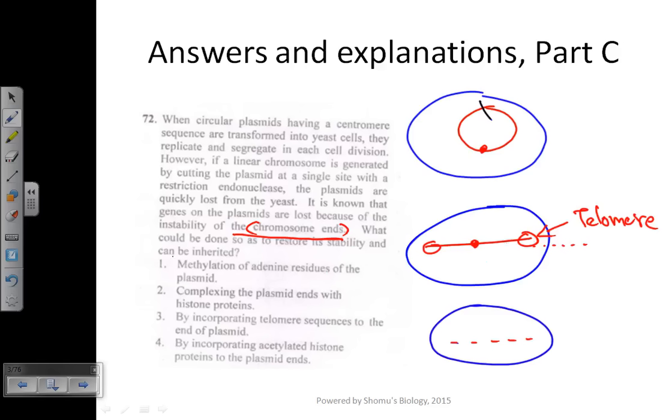The second option is complexing the plasmid ends with histone proteins. This is not effective because histone proteins can be removed by the cell through histone acetyltransferase enzymes, which add acetyl groups to histone tails. Once removed, the chromosome ends would be available for degradation. So this is also not true.